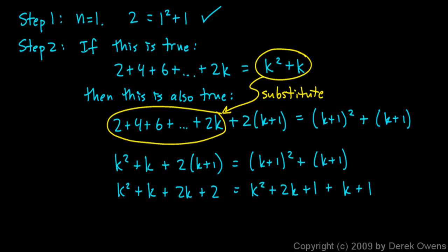Now, back to the left side, I have a k and a 2k. So combining like terms, I have k squared plus 3k plus 2.